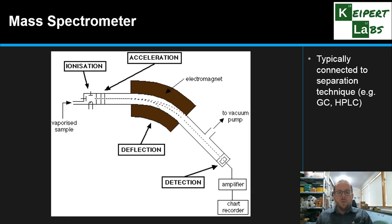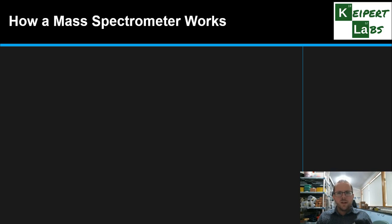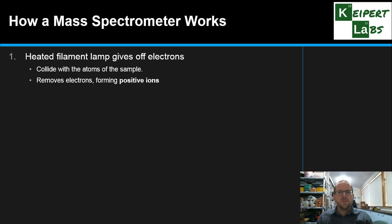We'll think about in a future unit how it might be typically connected to a separation technique to analyze components of a mixture, but today we're looking at it analyzing the isotopes of a particular element where it can be used directly. So let's look through the stages of how this works.